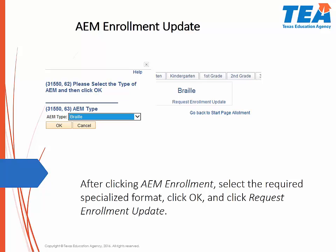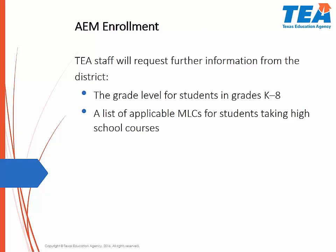After clicking AEM Enrollment, select the required specialized format such as Braille, Large Print, or Audio. Then click OK and click Request Enrollment Update. TEA staff will request more information by sending an email with a form to be filled out. This form will ask the district to indicate the format and the grade level needed for students in grades K through 8. For students in high school, please indicate either the MLC or the course name as well as the format. Eventually, this form will be linked in EMAT without a need for an email from TEA.